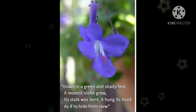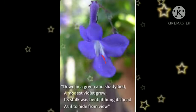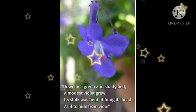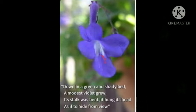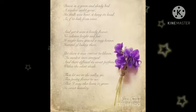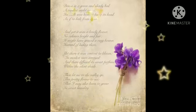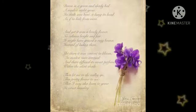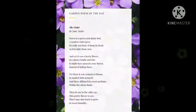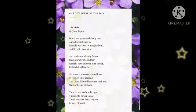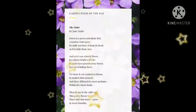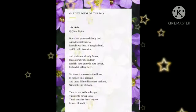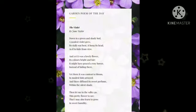Now let us get into the poem. Down in the green and shady bed, a modest violet grew. Its stalk was bent, it hung its head, as if to hide from view. And yet it was a lovely flower, its color bright and fair. It might have graced a rosy turf instead of hiding there. Thus it was content to bloom in modest tints arrayed, and they diffused a sweet perfume within the silent shade.